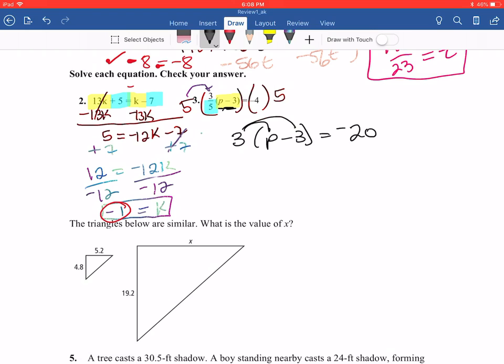All right, so now we've rewritten this, and now we're going to distribute the 3 to both terms inside the parentheses. So that's going to become 3p minus 9 is equal to -20. Now I'm going to add 9 to both sides. That's going to give me 3p is equal to -11. Divide by 3. Divide by 3. p is going to be equal to -11 thirds.